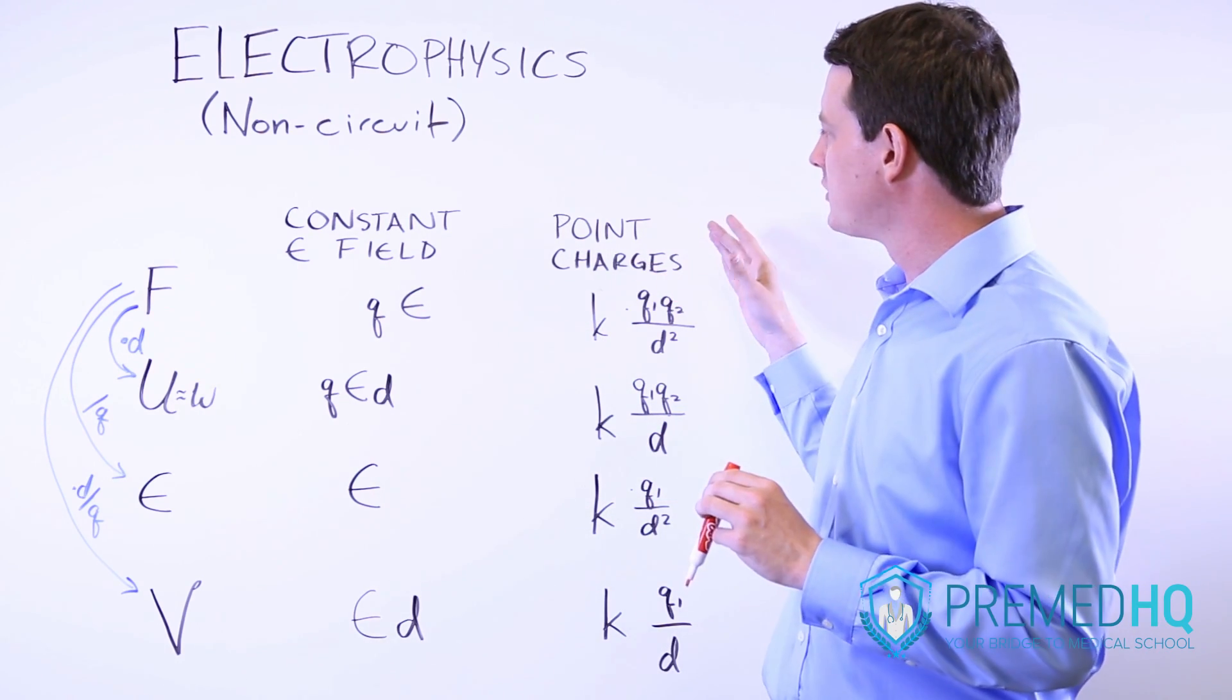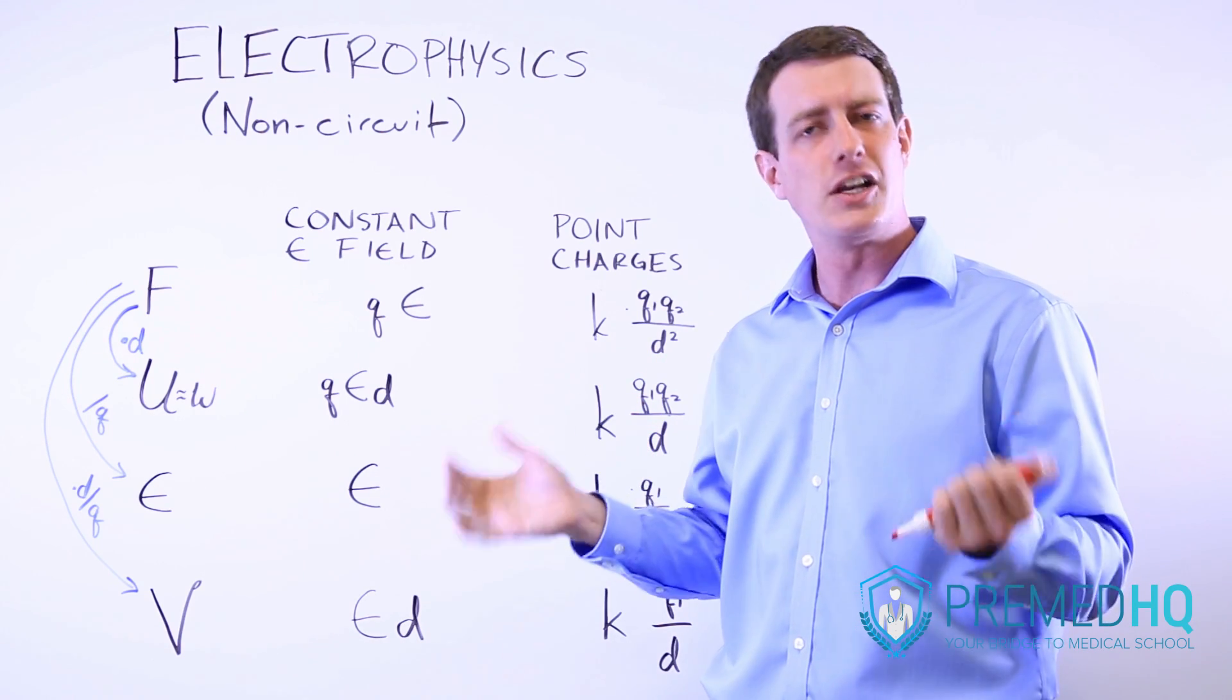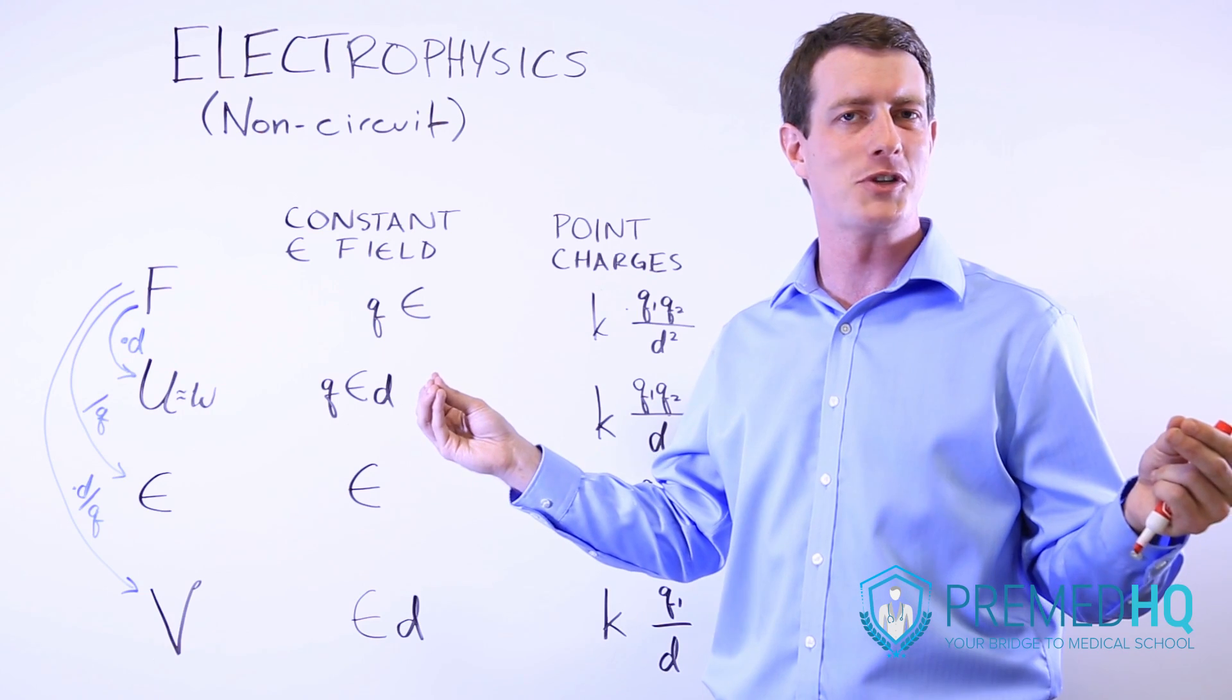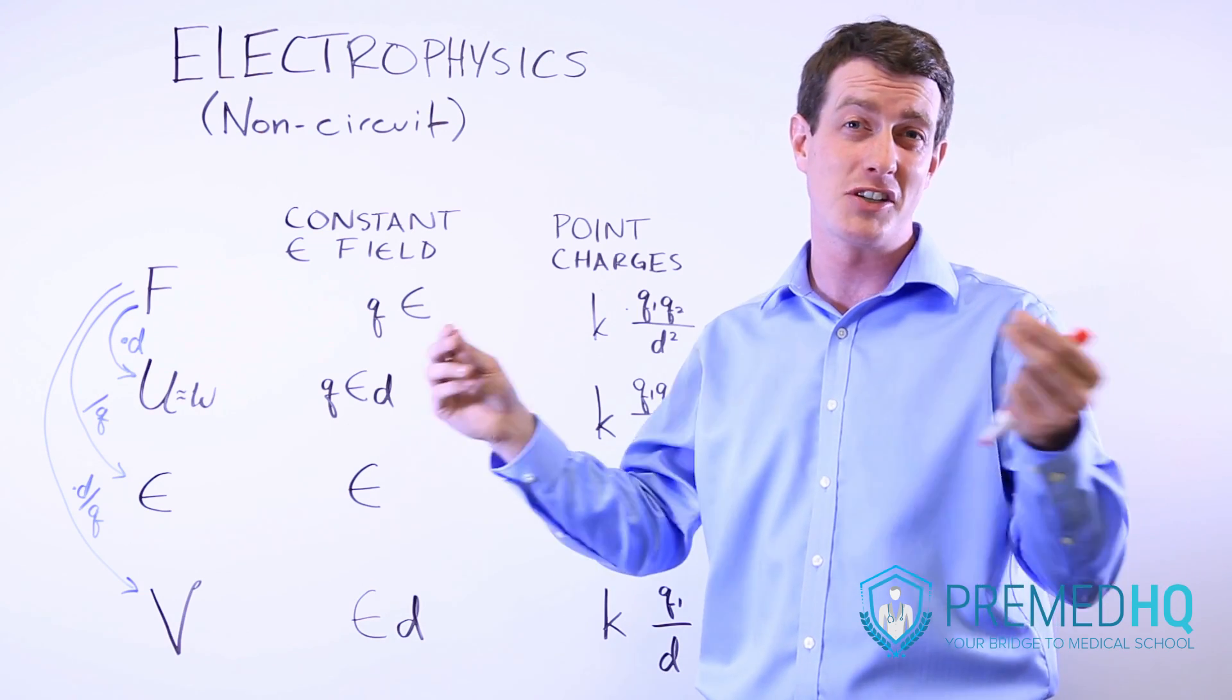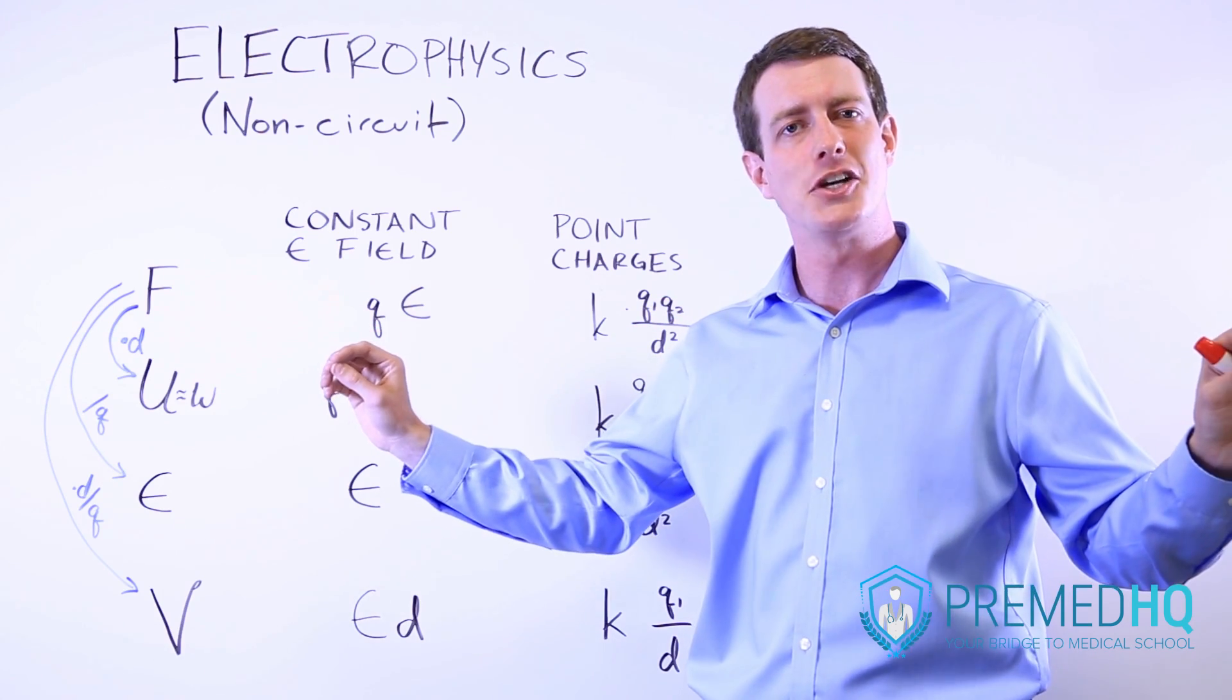The other type of scenario you'll encounter will be point charges, where two charged objects are exerting a force on each other, either an attractive or repulsive force, depending on whether they are opposite charges, which will attract, or the same type of charge that will repel each other.